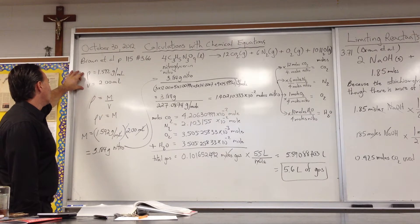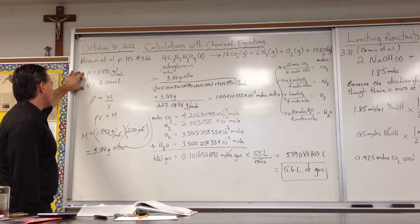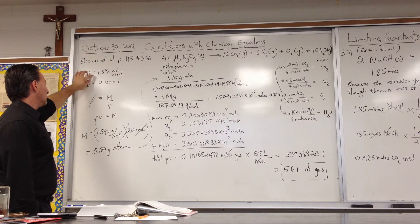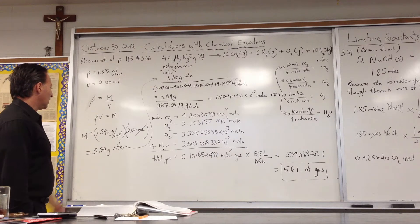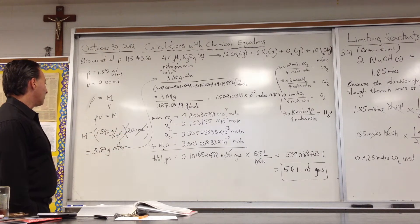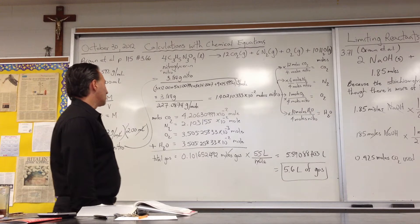Here are the two variables that we need to solve that. We plug in the density and the volume. The milliliters cancel. We get 3.184 grams of nitroglycerin.